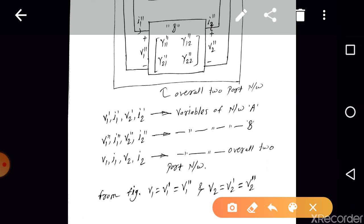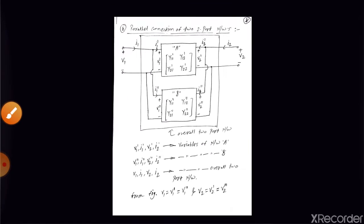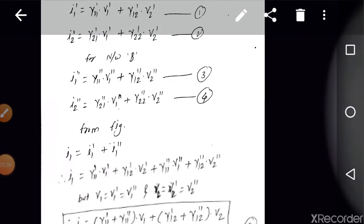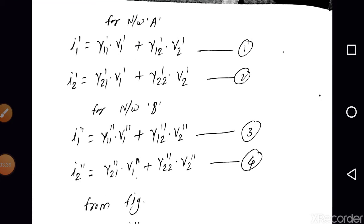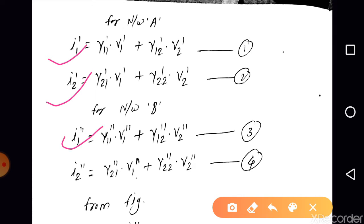From the network connections, V1 = V1-dash = V1-double-dash and V2 = V2-dash = V2-double-dash. For Network A, the Y-parameter equations give: I1-dash = Y11-dash·V1-dash + Y12-dash·V2-dash, and I2-dash = Y21-dash·V1-dash + Y22-dash·V2-dash. For Network B: I1-double-dash = Y11-double-dash·V1-double-dash + Y12-double-dash·V2-double-dash, and I2-double-dash = Y21-double-dash·V1-double-dash + Y22-double-dash·V2-double-dash.